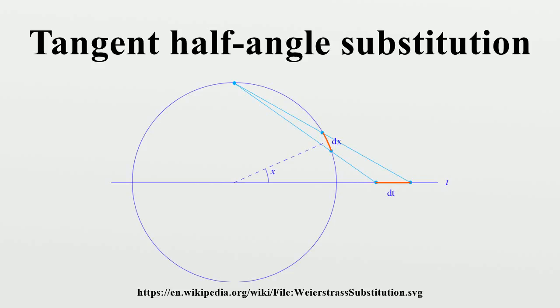No generality is lost by taking these to be rational functions of the sine and cosine. Michael Spivak wrote that the world's sneakiest substitution is undoubtedly this technique.